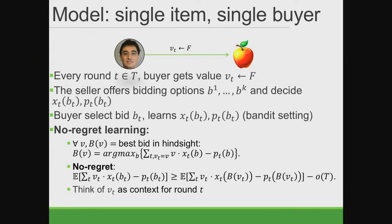We define b(v) to be the best bid for some value v — the bid maximizing utility, which is the value times the probability of getting the item minus the price paid. No-regret means that what the buyer gets is not much worse than using the best bid for each value. The seller can change strategy over time, and the seller is not telling the buyer the two parameters before the round — you only learn them after you bid something.